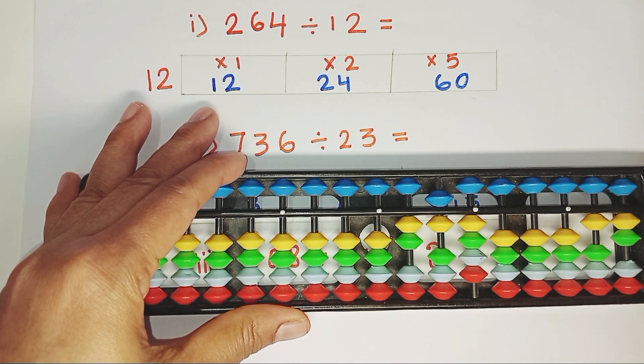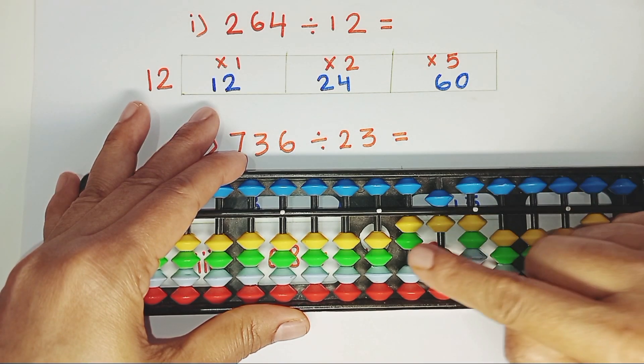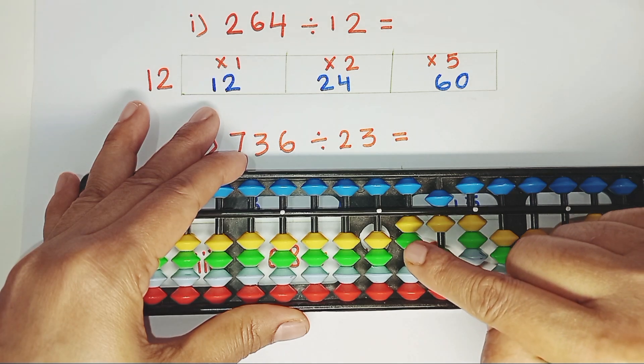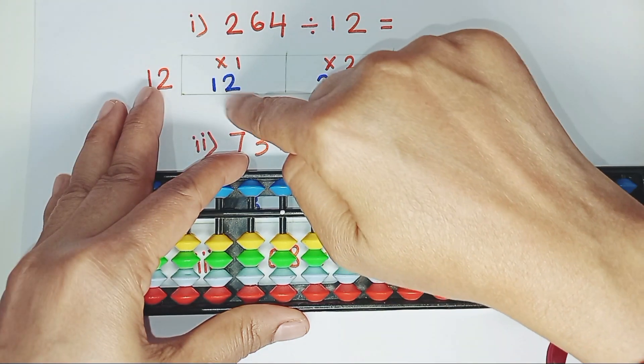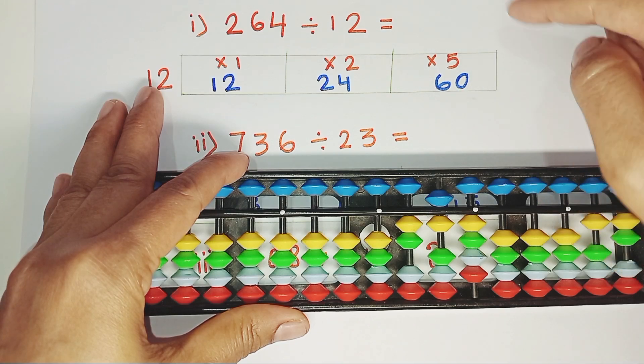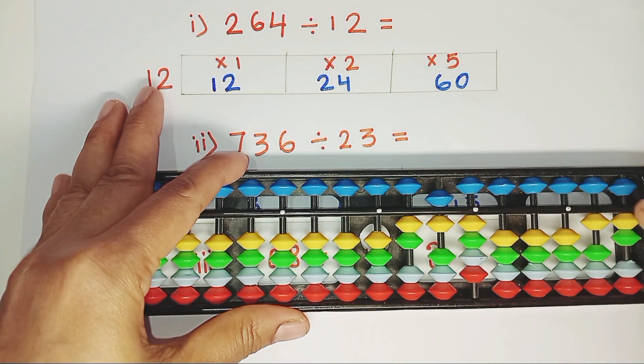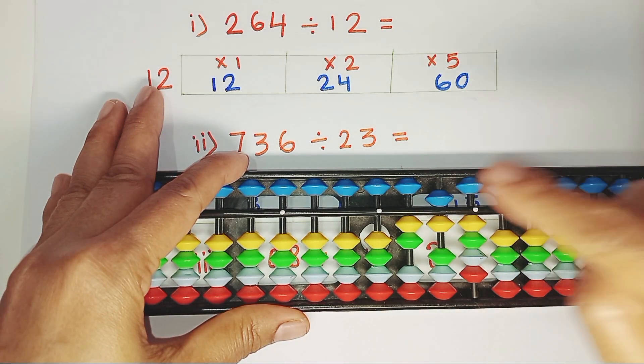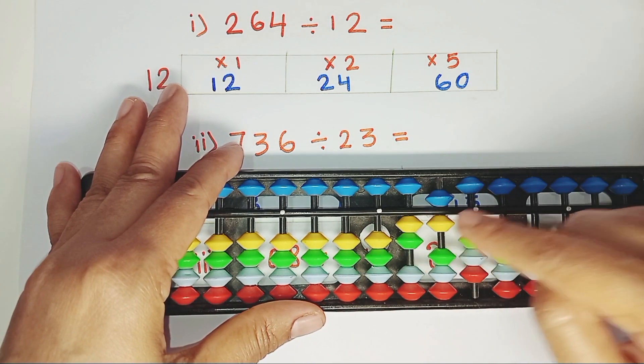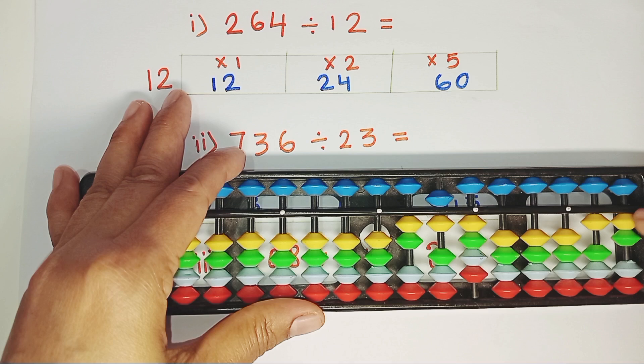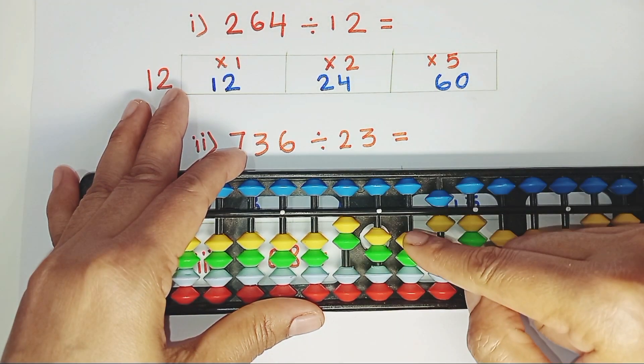As the divisor is in double digits, we need to consider 2 rods. That represents 2 and 6, which is 26. 26 falls between 12 and 60. So we will consider 24. 12 times 2, 24. We will jump one rod and place the answer here. As you consider 2 rods and divisor has also 2 digits. 12 times 2, 24.